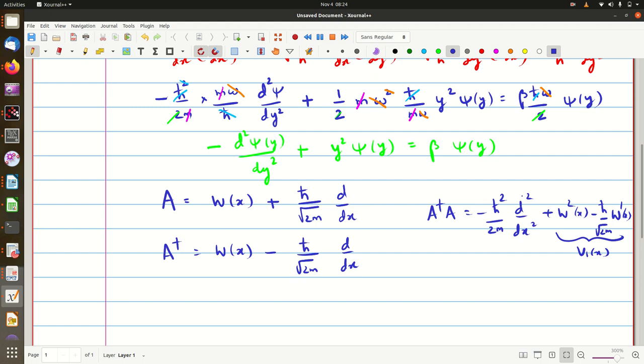But now our Hamiltonian has only d squared by dy squared. So we do not want this factor ℏ between. So what we do is we redefine our operators in this fashion.